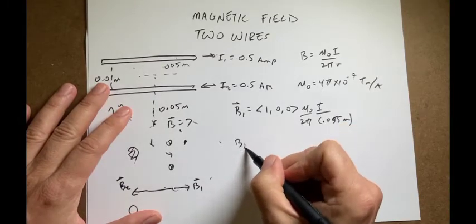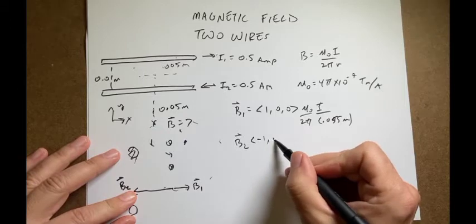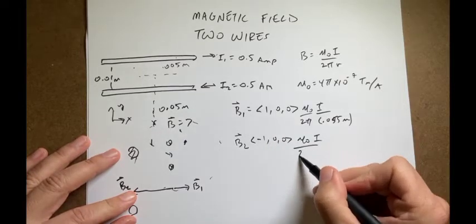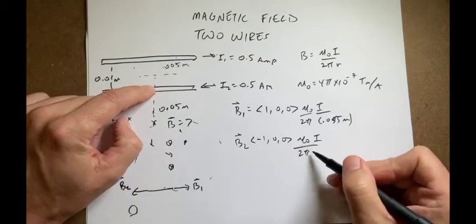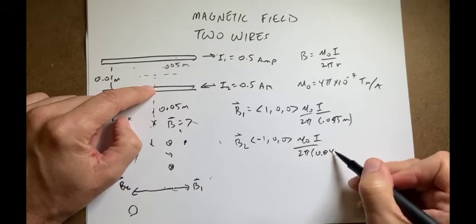And then for B2, it looks the same thing, except this is in the negative x direction. So I have a negative 1, 0, 0 component, mu naught. It has the same current i, 2 pi. Now, but how far is this one? It's going to be 0.045 meters.